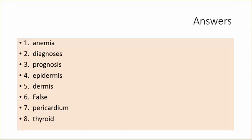Answers. Number 1 is anemia. Number 2 is diagnoses. Number 3 is prognosis. Number 4 is epidermis. Number 5 is dermis. Number 6 is false. Number 7 is pericardium. Number 8 is thyroid.